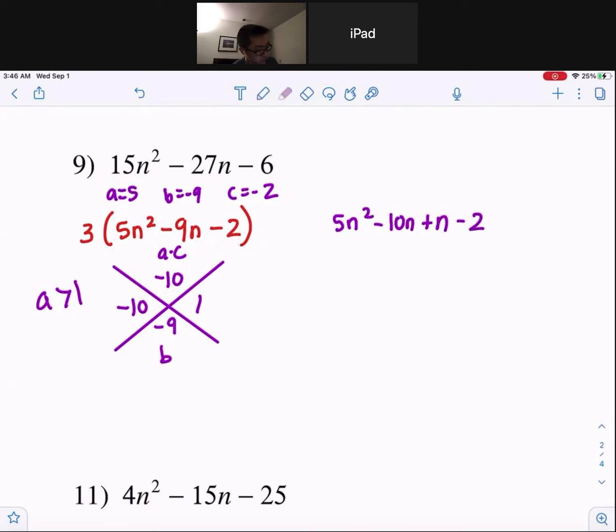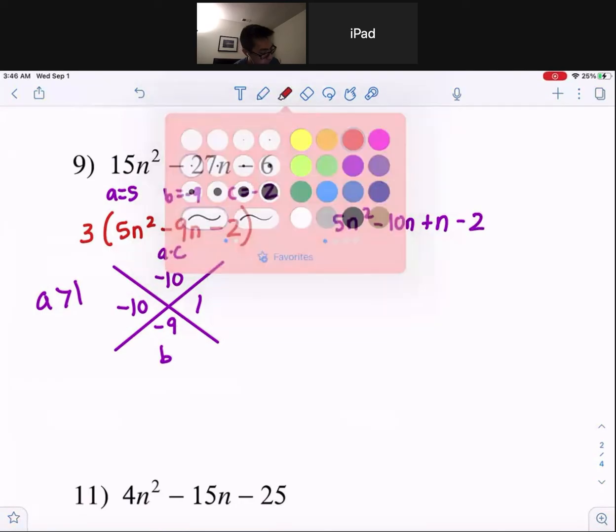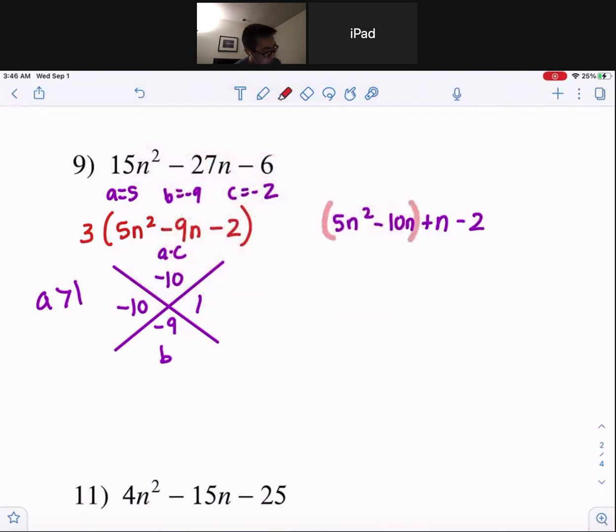Now, factor these by grouping. From the first grouping, you guys can factor out a 5n. 5 divided by 5 is 1. You took away an n from n squared, so there's just 1n left over. Negative 10 divided by 5, you guys, is minus 2. And you took away its n out, so all you have is n minus 2.